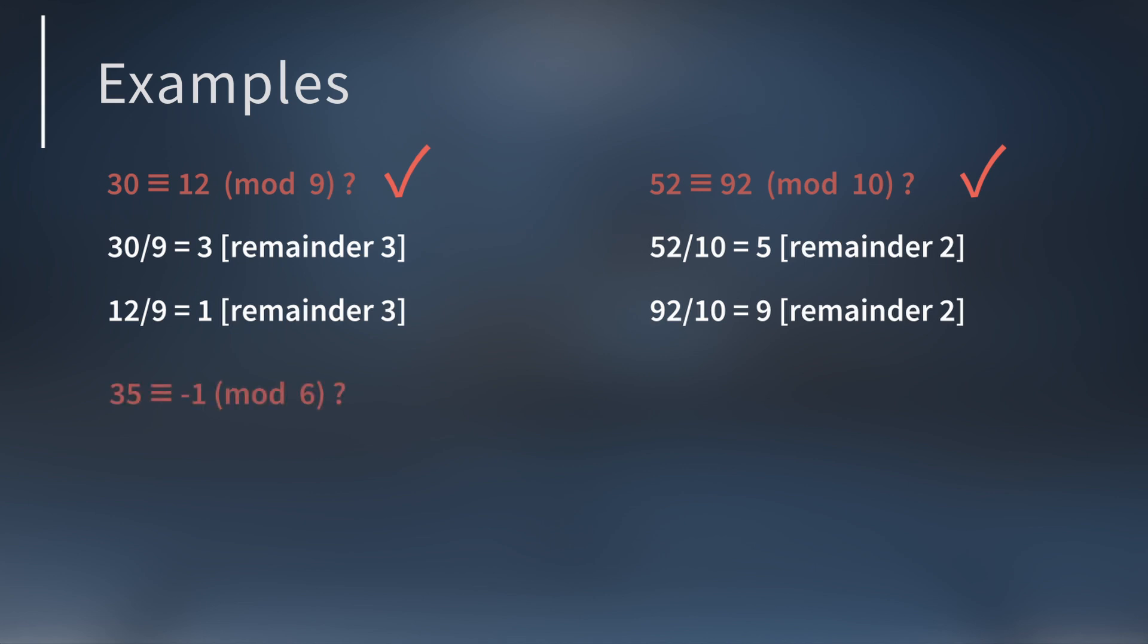35 is congruent to negative 1 mod 6. This is also true. If you divide 35 by 6, you get a remainder of 5. And if you divide negative 1 by 6, you get a quotient of negative 1 and also a remainder of 5.